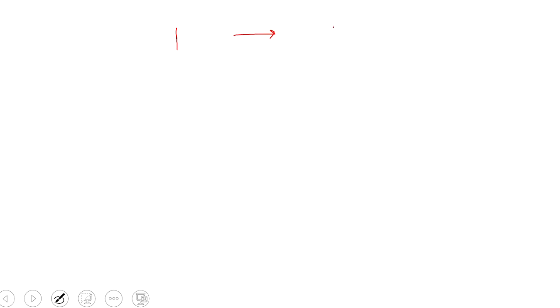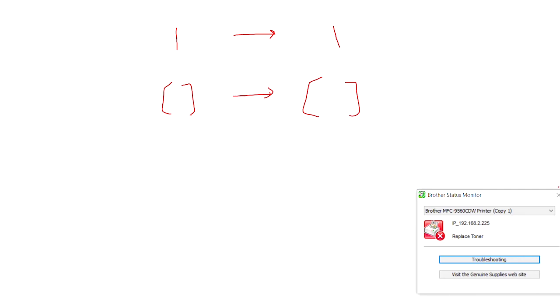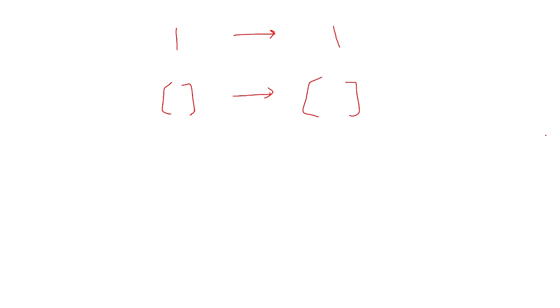We will use pseudo-code to describe this program, but first we need to define when to stop the recursion — the base condition. If you have only one element, the permutation is just itself. If the list is empty, the permutation is an empty list. These are the base conditions where we stop going deeper in the recursion.